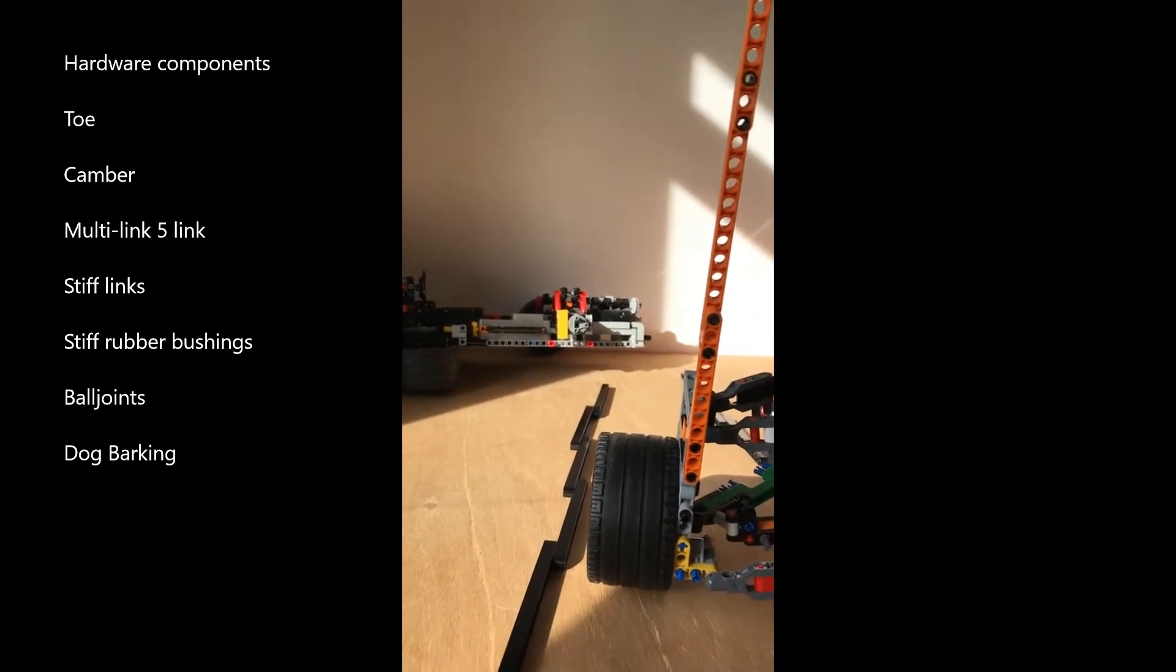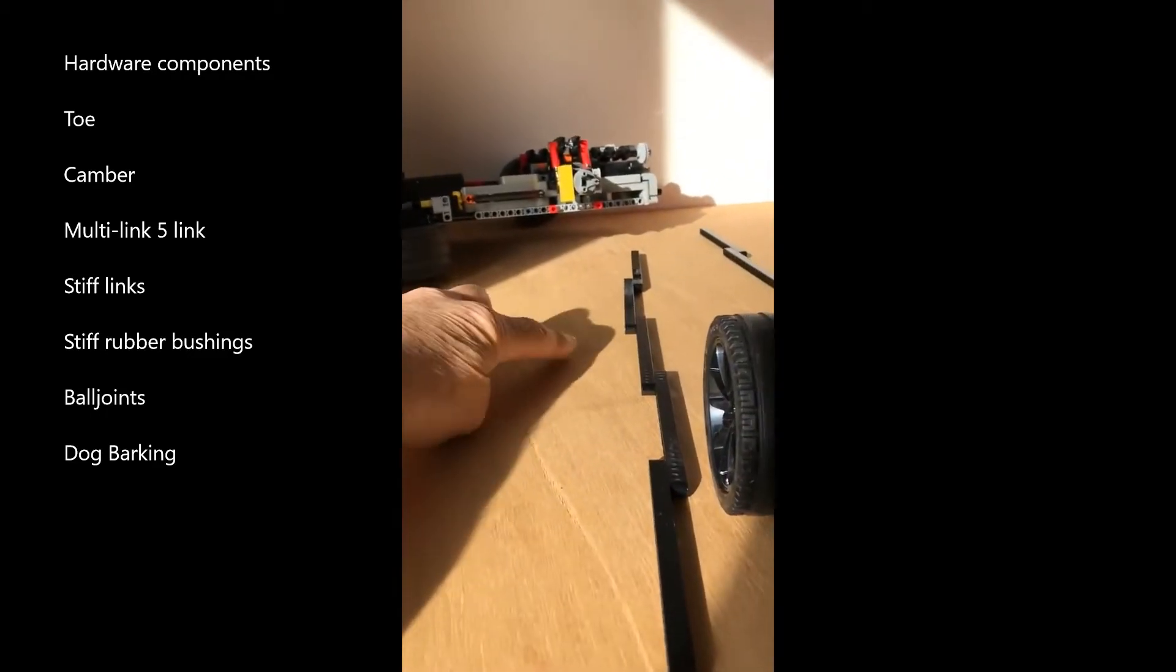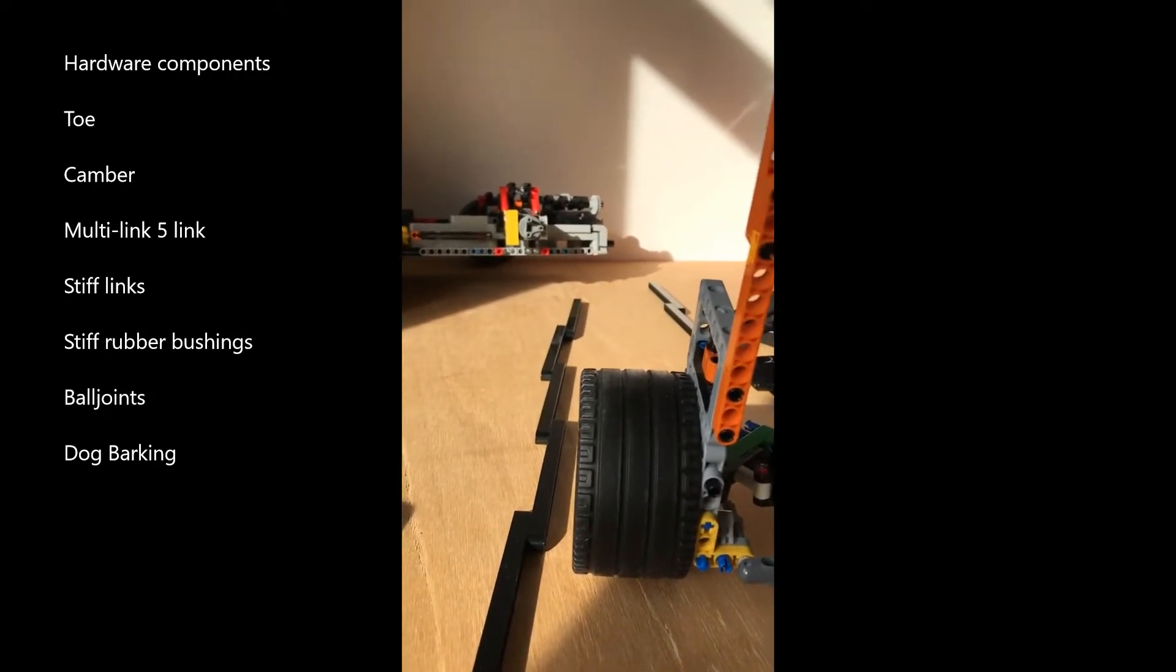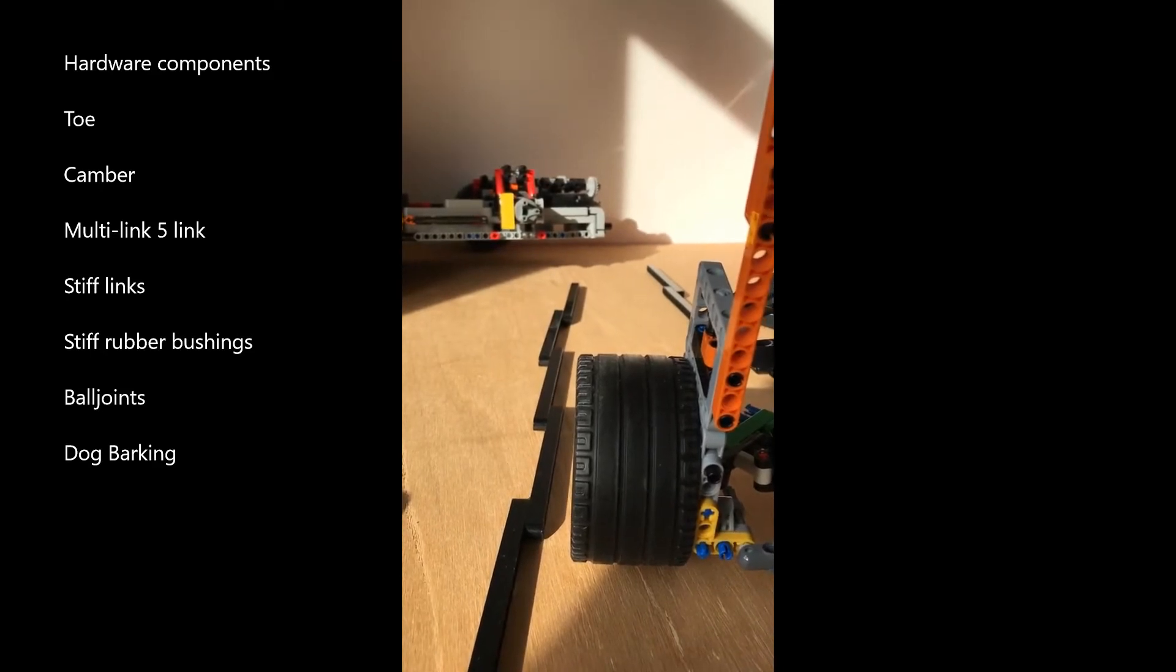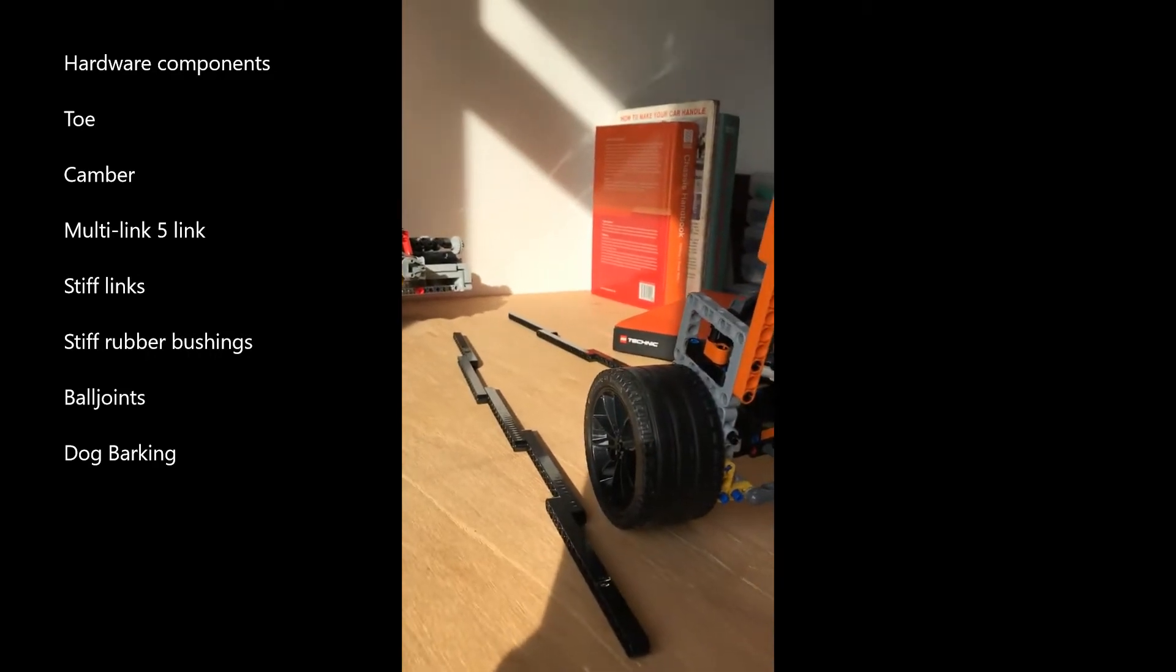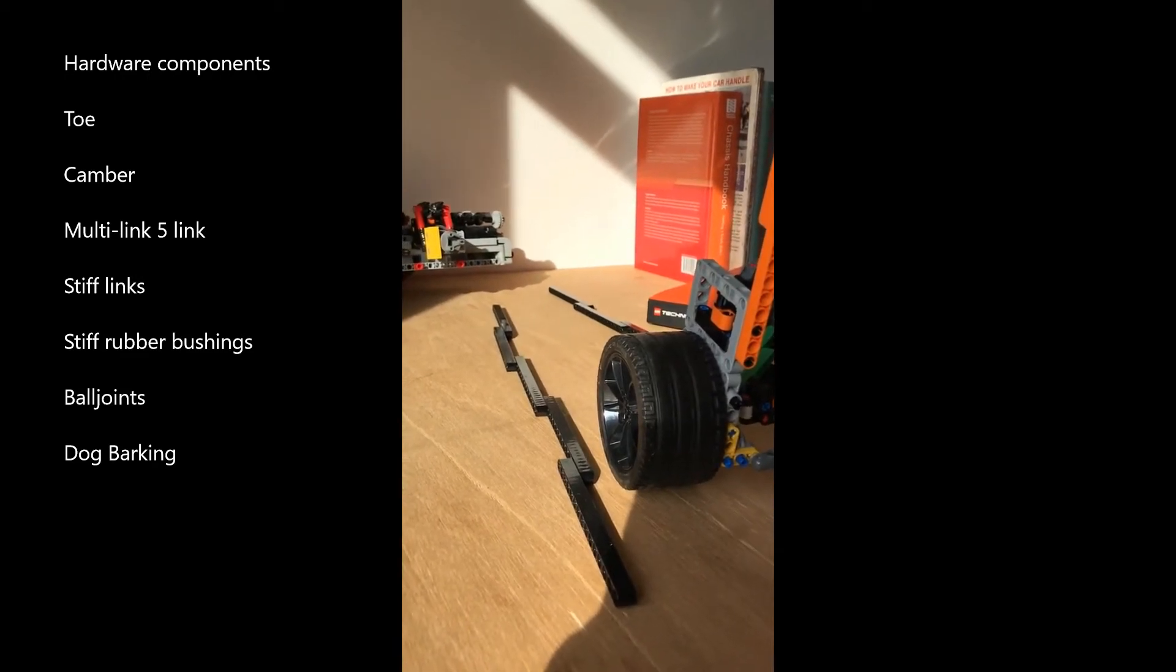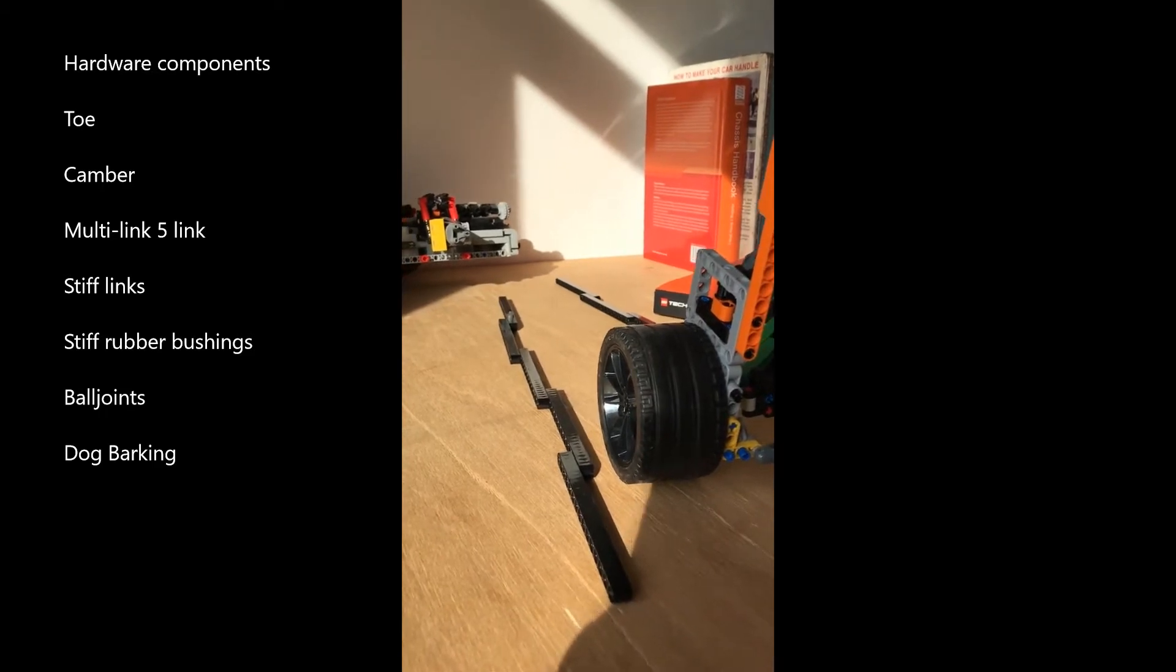For example, the toe on a typical car is defined by this line here. And if this is the center line of the car, these two lines would meet about ten meters in front of the car. And we call this toe in. And it's toe in that is responsible for the stability of the rear axle. Toe out would give an unstable axle which would then swap ends on us in a turn.